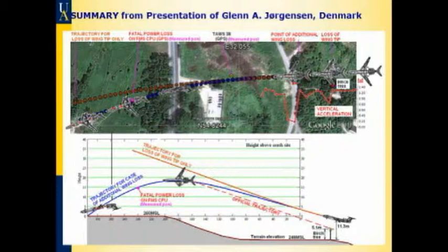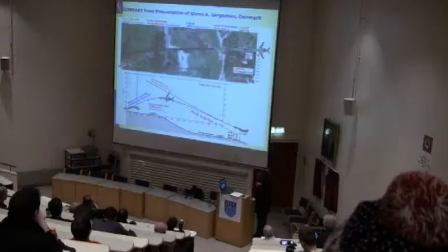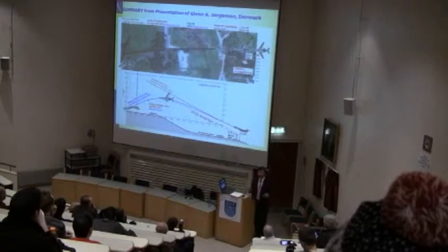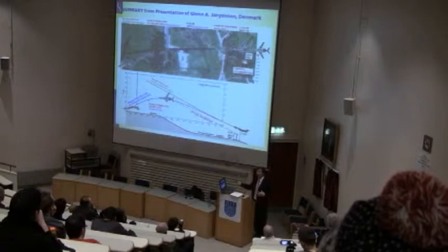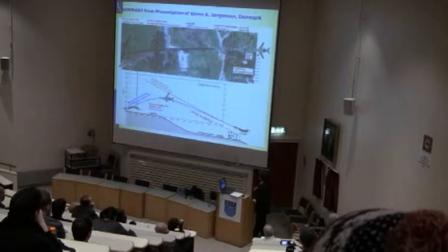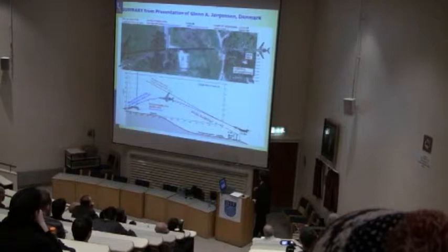Jørgensen's aerodynamic analysis, working backward from the first ground mark, independently confirmed the TAWS measurement is correct. He found that for the sharp left turn to occur, the airplane must have lost two-thirds of its wing — not just one-third. The debris laying before the ground contact location is consistent with this. No matter who did the calculation — myself in Akron, Jørgensen in Denmark, or Dr. Dabaczek in Baltimore — all results agree with each other but nothing agrees with the official report.